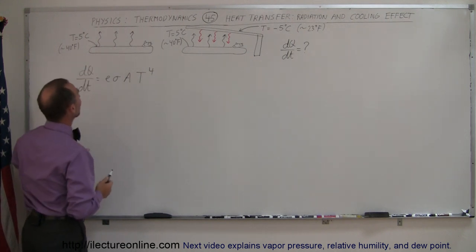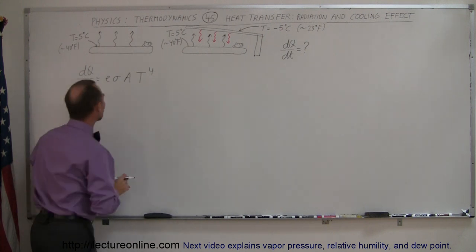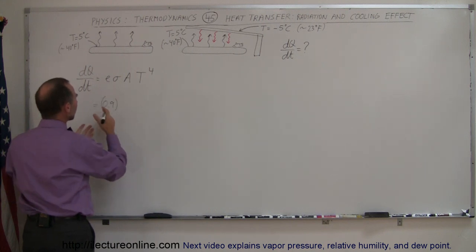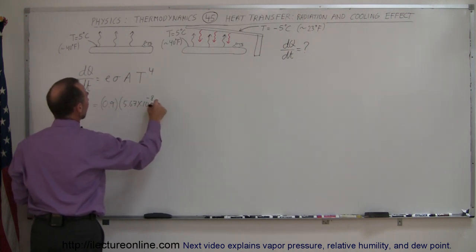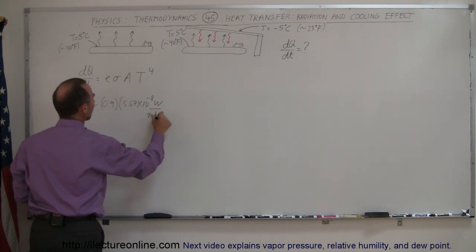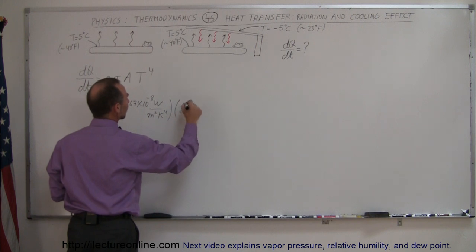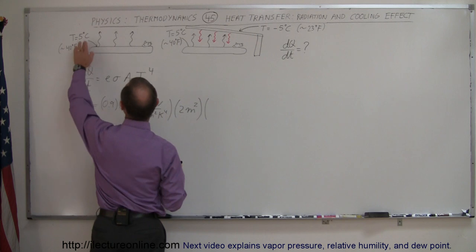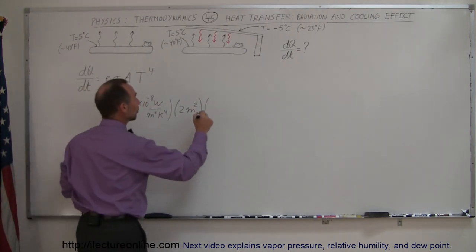So first we're going to do this case right here. The area of the bag, let's say that it's about 2 square meters in area, then we get this is equal to 0.9, which would probably be a good approximation for the emissivity of the bag, times sigma, which is 5.67 times 10 to the minus 8 watts per square meter per Kelvin to the fourth power, times the area, let's assume that the bag has an area of about 2 square meters. And the temperature would be 5 degrees centigrade, of course we have to convert that to Kelvin, and 5 plus 273 is 278 Kelvin.